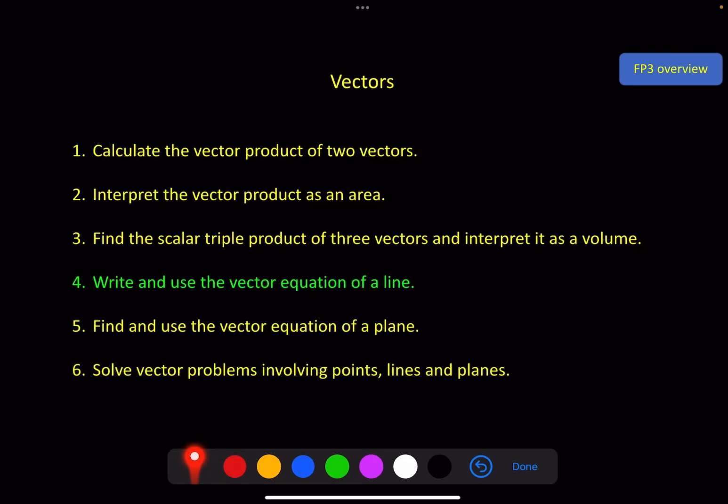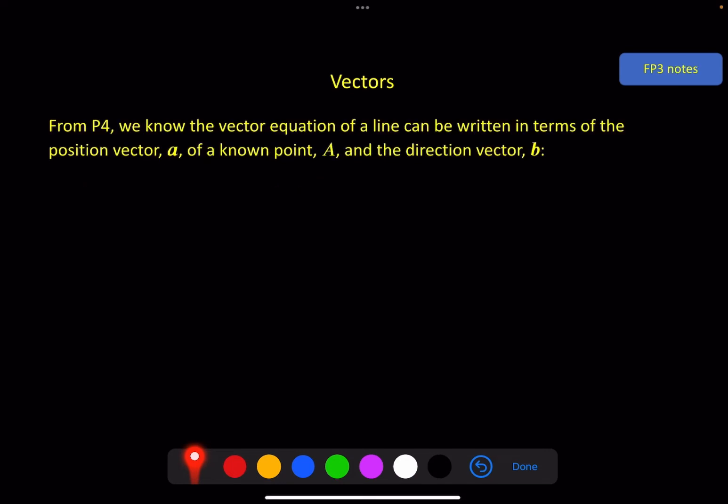Okay, in this video we're going to look at the vector equation of a line. To start us off, coming back from P4, we already know a vector equation of the line in terms of the position vector a of a known point and the direction vector b.